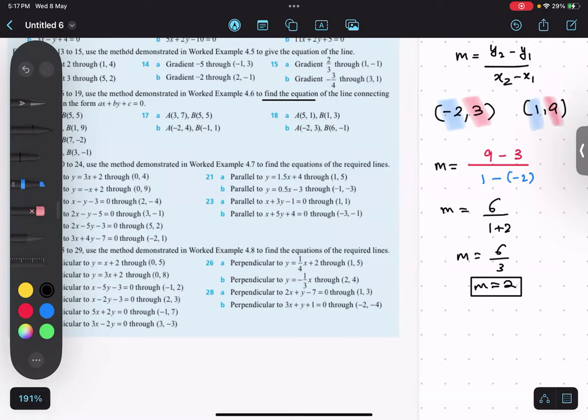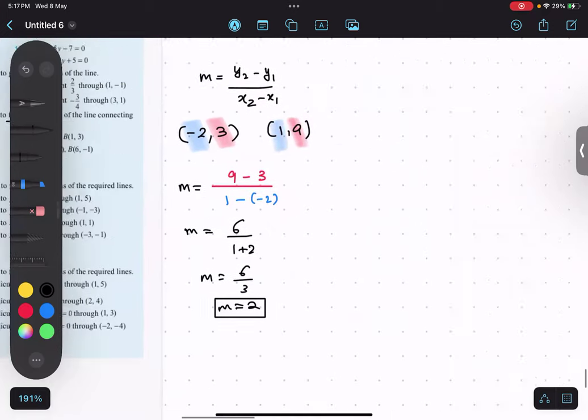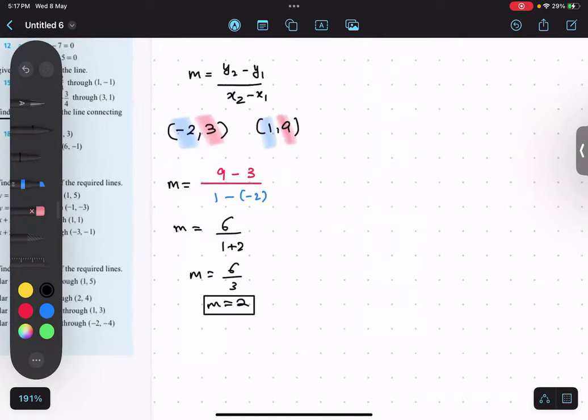So the slope value is 2, I got my m value. Is that clear? Yes sir. Now I have to figure out the value of c, that means y-intercept.